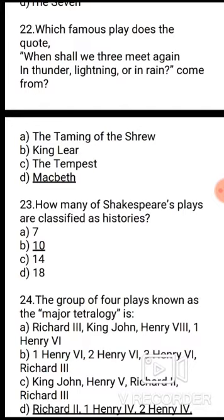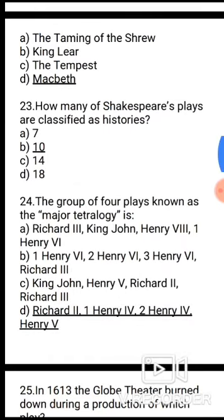Question 23: How many of Shakespeare's plays are classified as histories? Options: A. 7, B. 10, C. 14, D. 18. The correct answer is option B, 10.